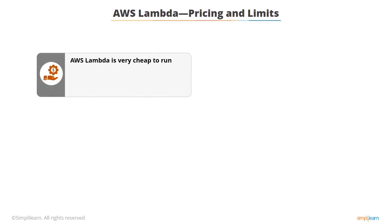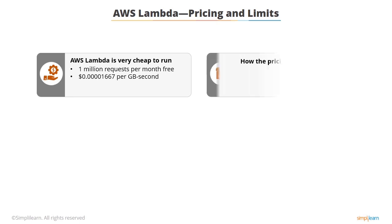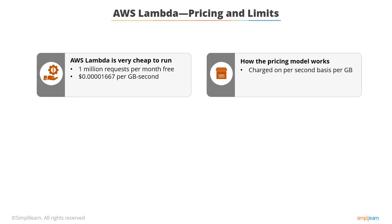AWS Lambda is very cheap to run. The first one million requests per month are free. After that, Lambda costs $0.00001667 per gigabyte-second. Lambda functions run in a container-like environment where you can specify the amount of memory available. Memory settings start at 128 megabytes and increment in 64-megabyte blocks up to 1,536 megabytes. The maximum run time for a Lambda function is 300 seconds, or 5 minutes.